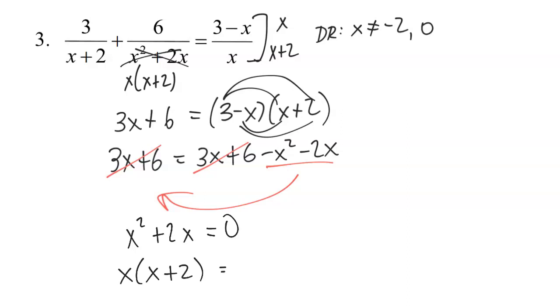I don't need not equals to 0 there, just equals to 0. And then that's going to tell me that x is equal to 0 and negative 2. But if you look back, both of those are actually extraneous.